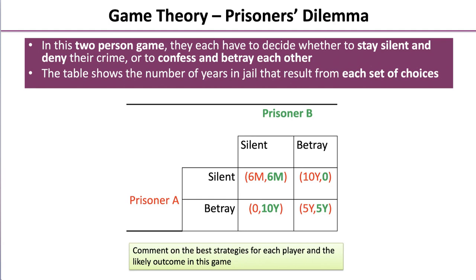For Prisoner A: if they decide to stay silent and Prisoner B stays silent, both receive a prison sentence of six months. If A stays silent and B betrays, A gets ten years behind bars and B gets away scot-free. If A betrays then they walk away with nothing in jail, and if B stays silent in that scenario, they get ten years. If both prisoners betray each other, the outcome is five years in prison each. So pause the video now and comment on the best strategies for each player and what you think the likely outcome of the game is.